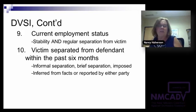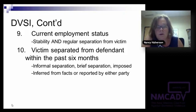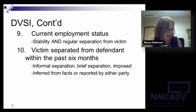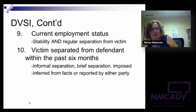Item eleven is whether this victim had a restraining order against this perpetrator at the time of the offense. This could be civil orders for protection or criminal orders. If any of those were in effect at the time of the current offense being evaluated, there are significant points to be added.